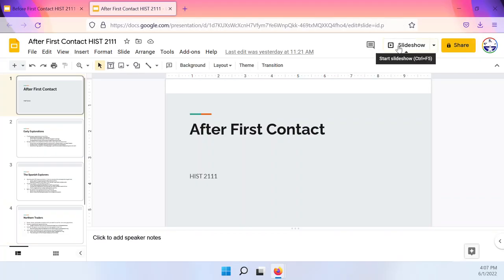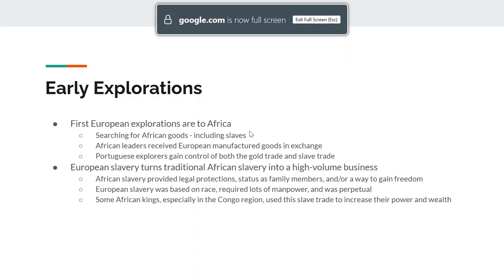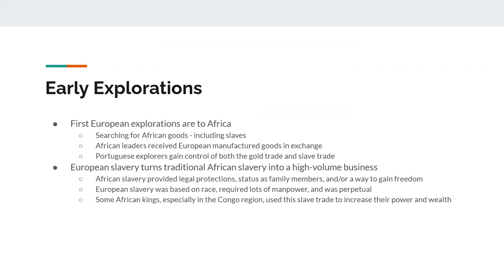Now, what happens after first contact? We have some early explorations that are going to happen from Europe. Europe is looking for a way to get African goods, including slaves, and a way to get to India without having to go through a middleman. By the 1400s, you have Portuguese sailors going up and down the coast of Africa, trading goods and services. By the early 1500s, Portuguese sailors are able to go around Africa and get to India. Portugal, for a brief amount of time, is going to be the most powerful country in the world — controlling the gold trade, the slave trade, and having a monopoly on getting to India.